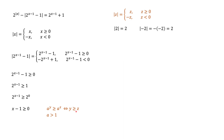This property follows from the fact that an exponential function with base a > 1 is a monotonically increasing function. So x − 1 ≥ 0 means x ≥ 1. Therefore, |2^(x−1) − 1| equals the top expression when x ≥ 1, and the bottom expression when x < 1.